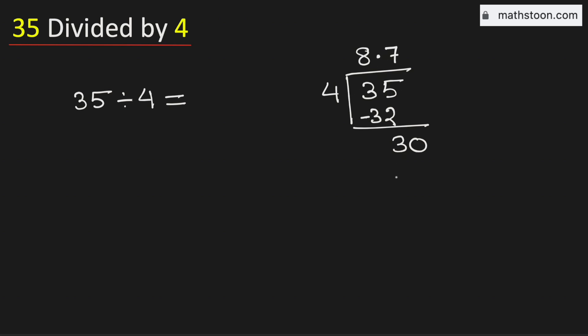Now 4 times 7 is 28. Subtract we get 2. As 2 is less than 4, that is why we will again borrow 10.